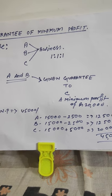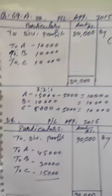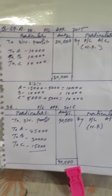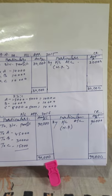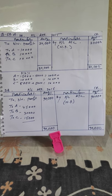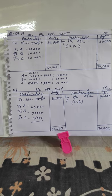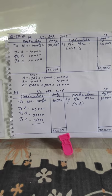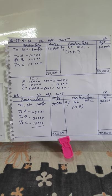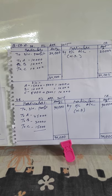Dear students, let's have a look at question 69A from your book, that is exercise 69A. In this question, first see what is given: A, B, C — three partners — and their profit sharing ratio is 3:2:1. Along with that, one more information is given: A has given a guarantee to C that C's minimum share of profit will be Rs. 10,000. In any situation, C will not get less than Rs. 10,000. If C is getting less than Rs. 10,000, the balance amount will be given to C by A, because A has given the guarantee. B is neutral — B has not given any guarantee.